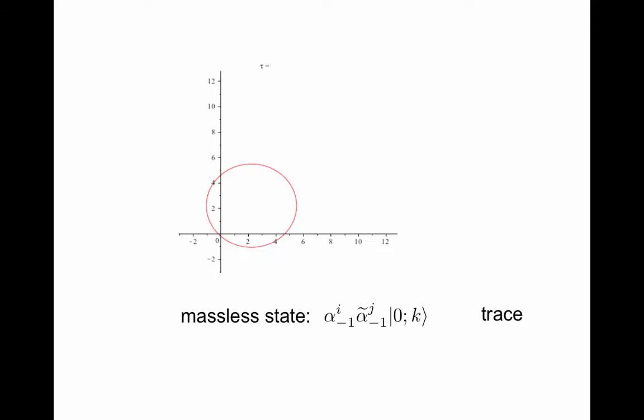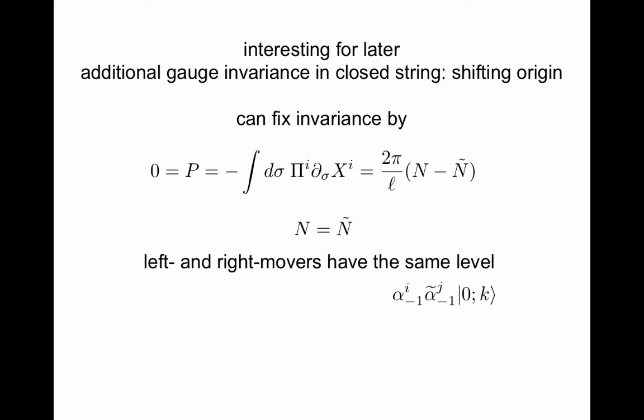For later, it's interesting that the additional gauge invariance in the closed string of shifting the origin around the closed string can be fixed by setting the operator p, which generates translations along the closed string, to zero. This imposes that the left and right movers should have the same level. That's why I didn't consider just putting in a left mover. You might have thought that should be a natural thing to do, but I actually have to put an equal number of left and right movers into my state.